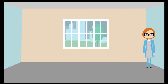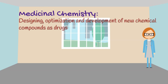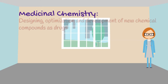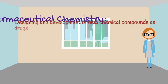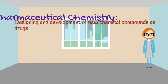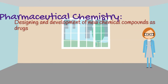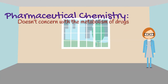The second branch is Medicinal Chemistry, or Pharmaceutical Chemistry. Medicinal Chemistry deals with designing, optimization, and development of new chemical compounds as drugs, and it concerns with the metabolism of drugs. Pharmaceutical Chemistry deals with the designing and development of new chemical compounds as drugs, but it does not concern with the metabolism of drugs.